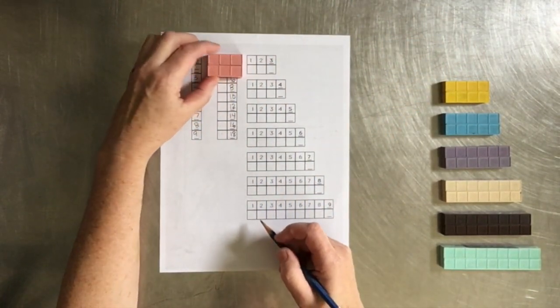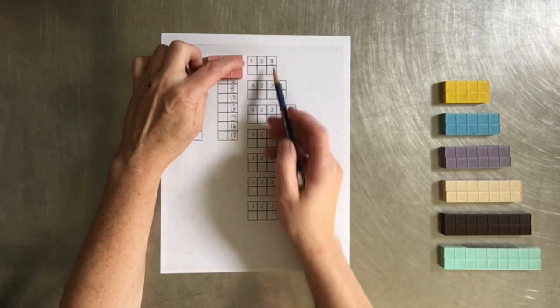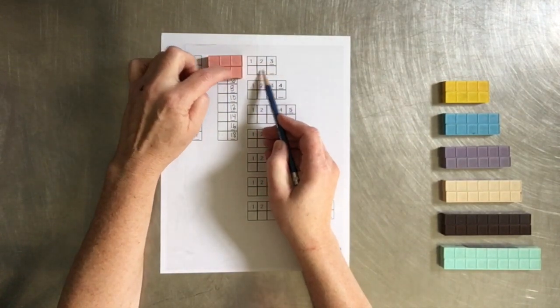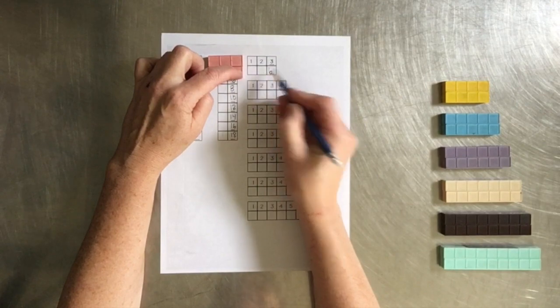Next we are counting the 3's. So 1, 2, 3. 1, 2, 3. 4, 5, 6. 7, 8, 9, 10.